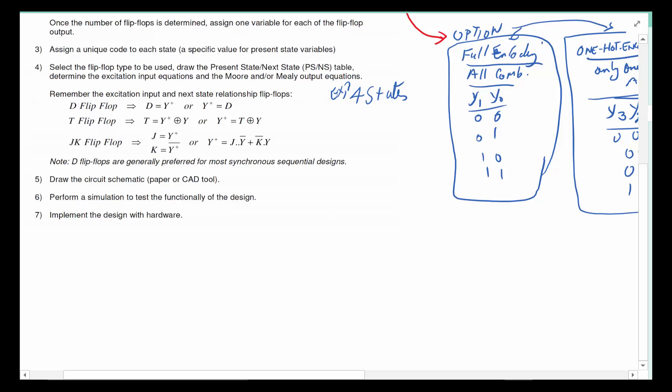In some cases, T flip-flop and JK flip-flop could lend a hand and reduce the amount of logic you have to add because of their nature with Q and Q-not options available.